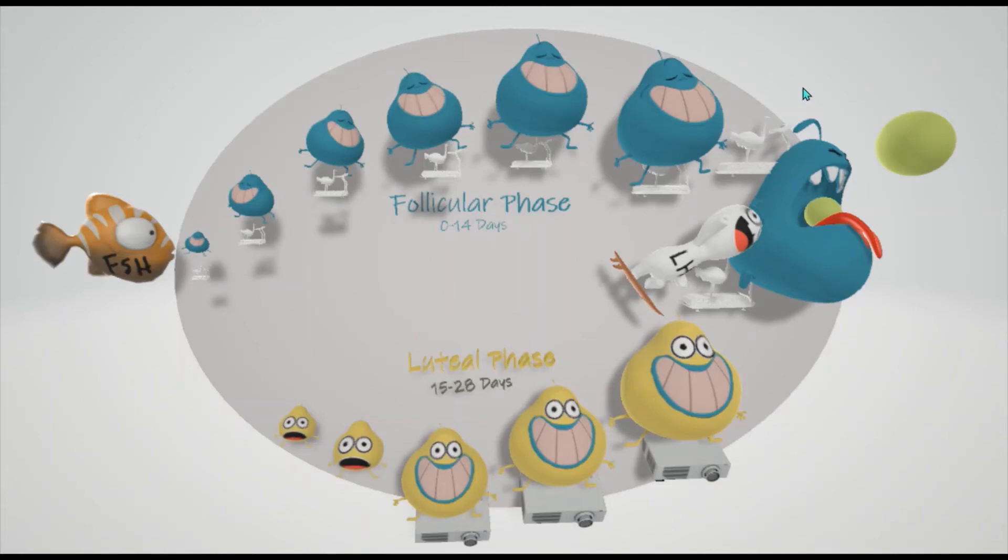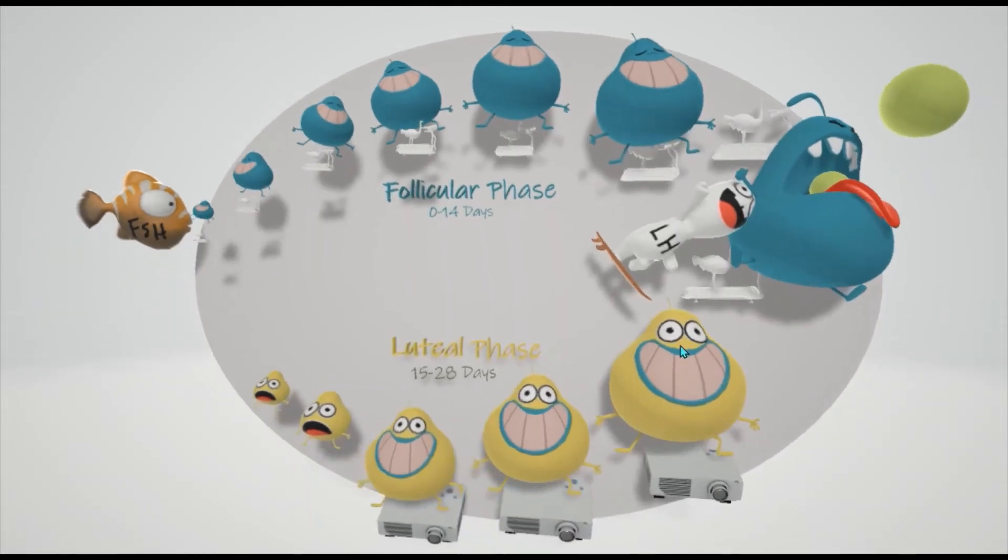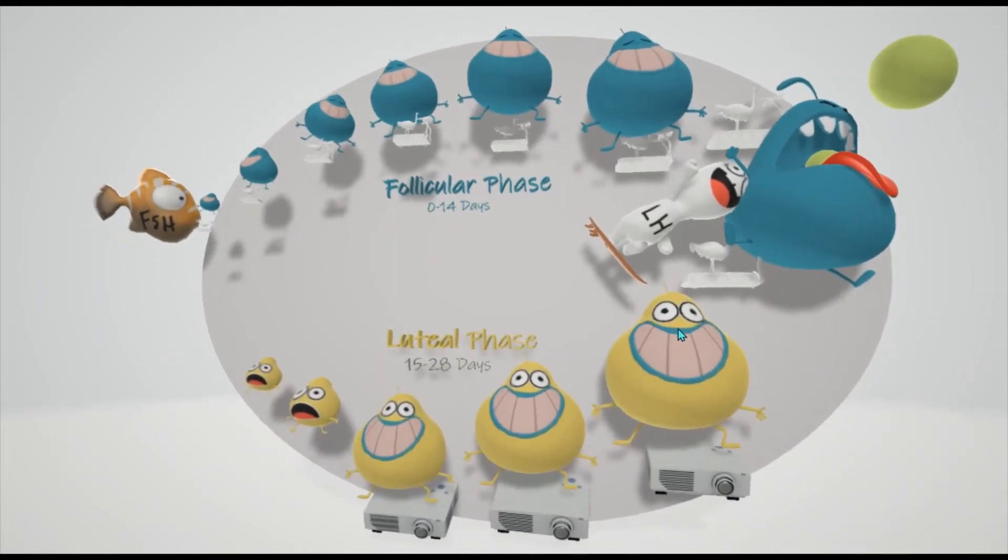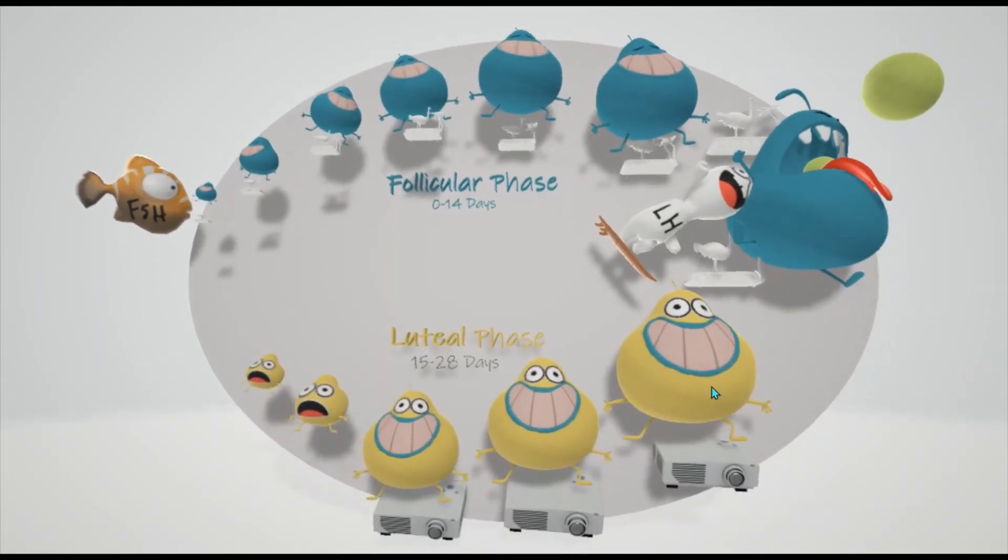The egg goes into the fallopian tube and it's only viable for a day or two. That's why fertilization can only happen in a day or two, that's when it happens. We're talking about the regular menstrual cycle where there's no fertilization, and so the egg disintegrates and the corpus luteum forms. It happens even when there is pregnancy, but we'll explain what does not happen when there's pregnancy. We're describing the normal situation.